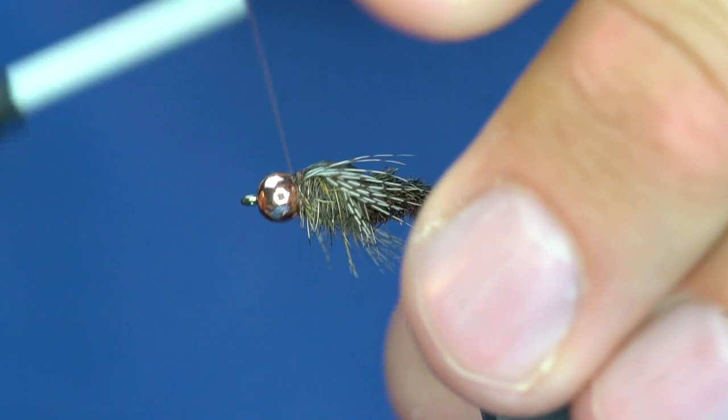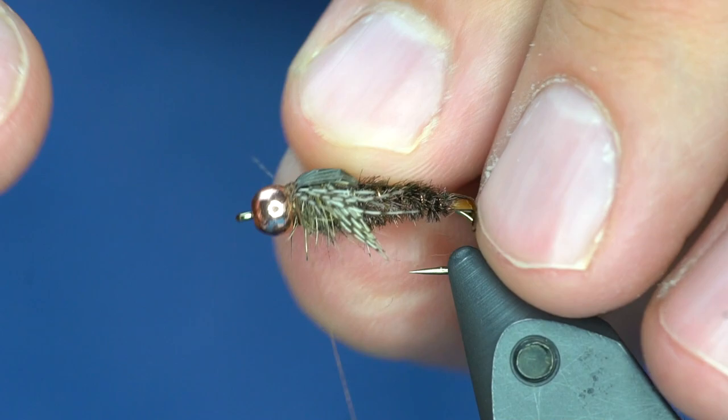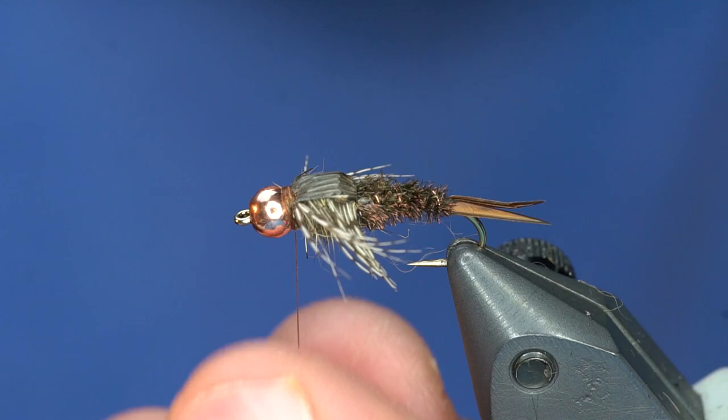And trim that off. And from here, I'm just going to clean those butts up and tuck them in underneath the bead. And build up a little bit of a head. Just a real basic whip finish. Now that's pretty much the fly. But what I'm going to do is I'm going to make it even more buggy.